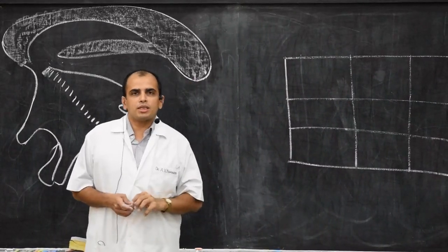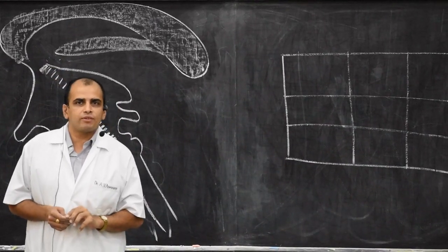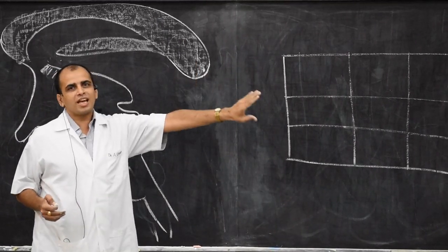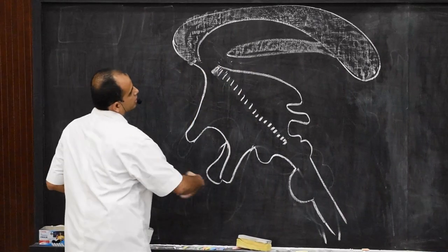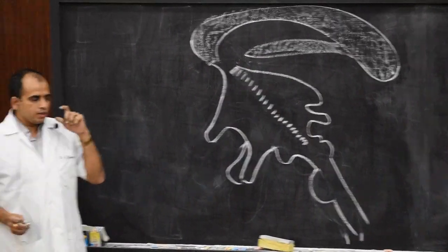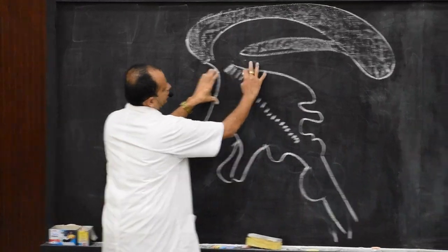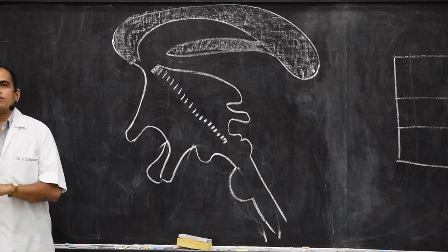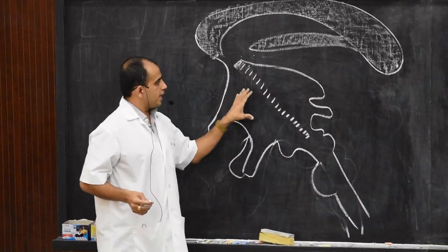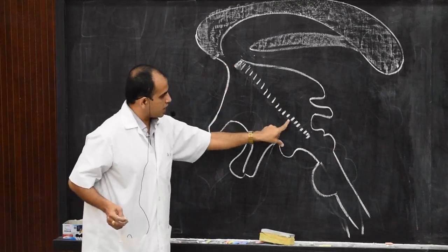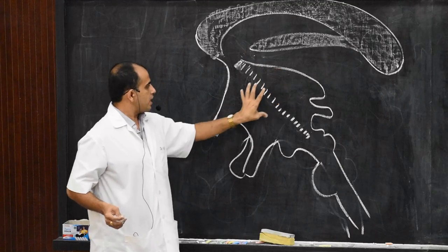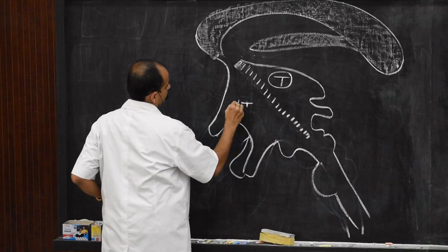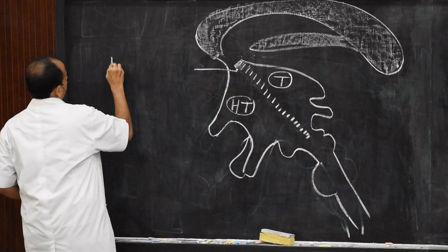Hypothalamus is a part or subdivision of the diencephalon. The name itself tells us it is below the thalamus. If you see the medial surface of the brain, you will find the cavity of the third ventricle. In the lateral wall of the third ventricle, we find the diencephalon. The diencephalon is divided by a hypothalamic sulcus into the thalamus part and the hypothalamus part, separated by the hypothalamic sulcus.